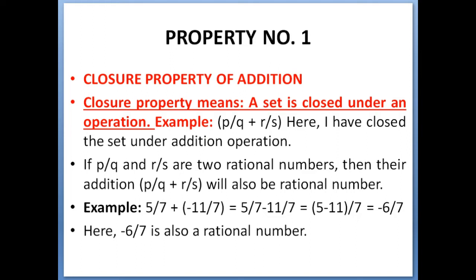If p/q and r/s are two rational numbers, then their addition (p/q + r/s) will also give you a rational number. Example: 5/7 + (-11/7) = 5/7 - 11/7. The operation will be inside a bracket: (5 - 11) = -6/7. Here -6/7 is a rational number. This is closure property of addition—you close this set of rational numbers under an operation.